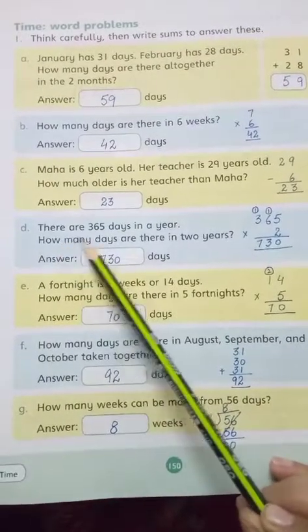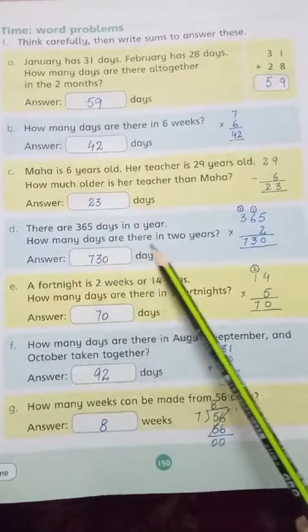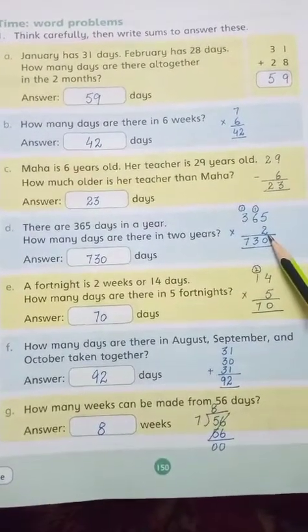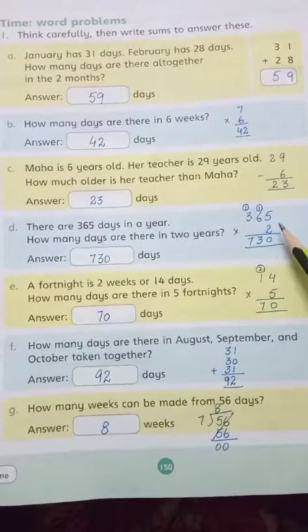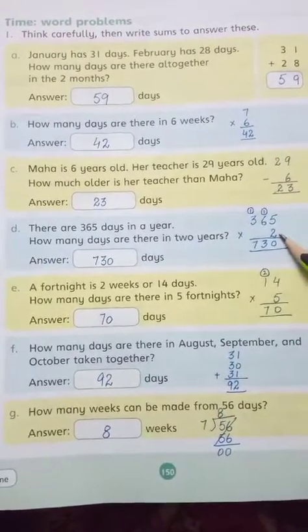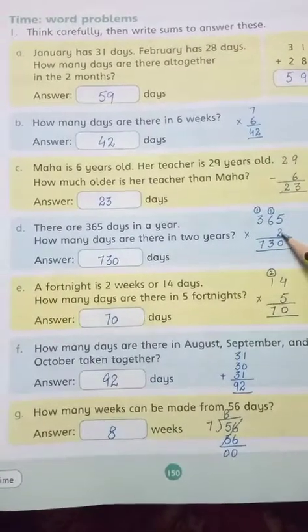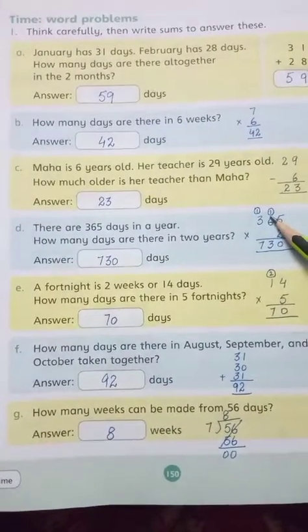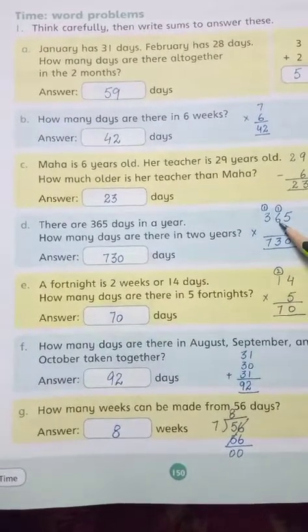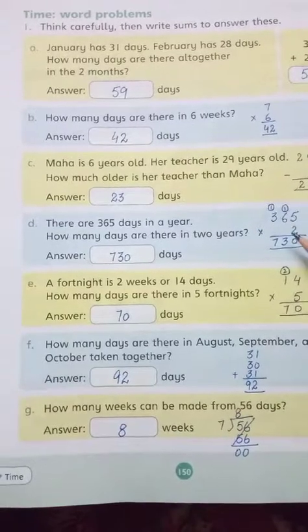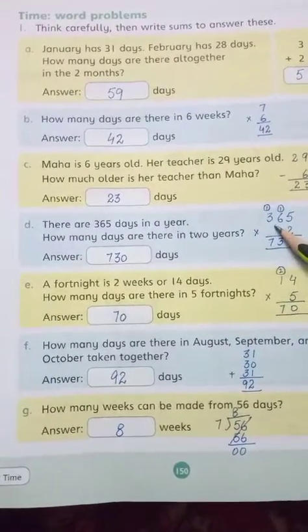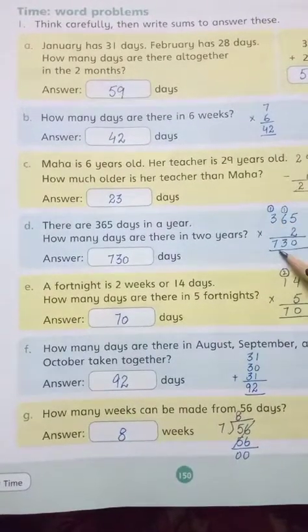Problem D: There are 365 days in a year. How many days are there in 2 years? Now we have to write. Right, we multiply. Five twos are ten, zero, one carry. Six twos are twelve, add one is thirteen, three, one carry. Three twos are six, add one is seven. Answer: 730 days.